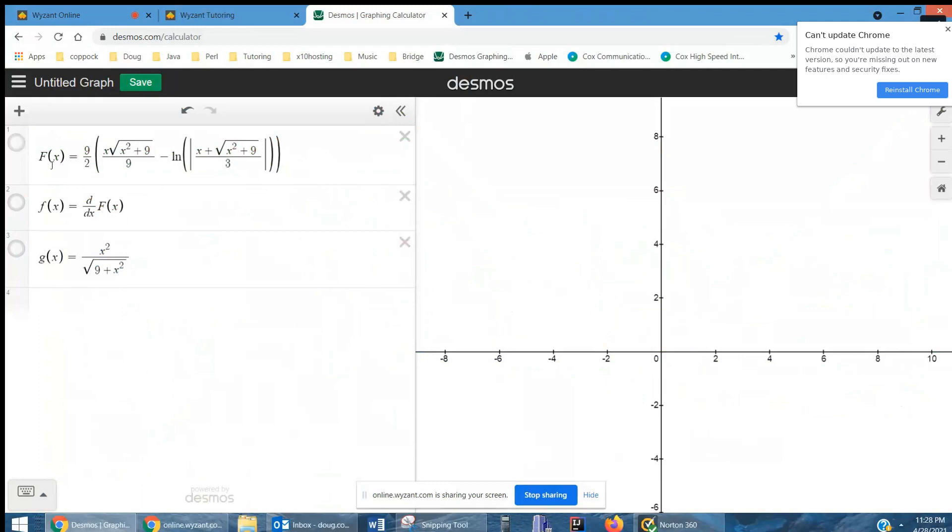I've said that big F is the antiderivative of this g that I started with. And I used the Desmos derivative operator to get f of x.